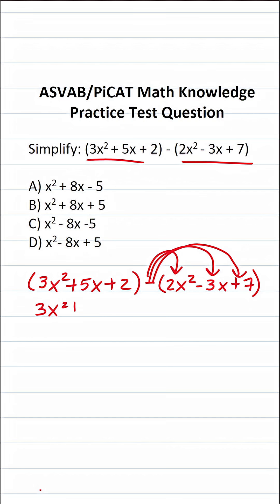This becomes 3x squared plus 5x plus 2. Let's go ahead and distribute this negative. A negative times a positive 2x squared becomes negative 2x squared. A negative times a negative 3x is going to be a positive 3x. Then finally a negative times positive 7 is going to be negative 7.